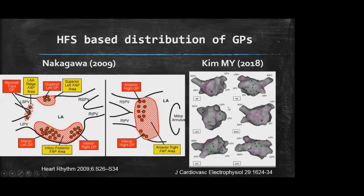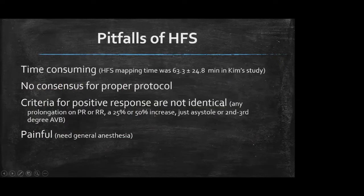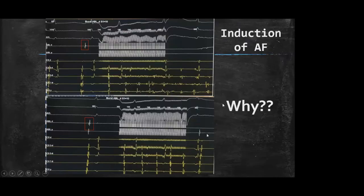Different groups have tried to define GP localization according to HFS responses. Nakagawa et al. defined five main GP areas around the left atrium, confirmed by Kim et al. recently. However, there are well-known limitations: HFS is time-consuming, there is no consensus on preparation protocol, criteria for positive response are not identical between studies, it is painful and requires general anesthesia. Most importantly, HFS can induce atrial fibrillation episodes, masking vagal response.